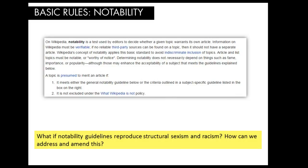First, does this topic have significant coverage? Significant coverage addresses the topic directly and in detail so that no original research is needed. Second, are the sources used to identify the topic reliable? Reliable means sources need editorial integrity to allow verifiable evaluation of notability, as determined by the reliable source guideline. Sources can include published works in all forms and media, and in any language. The availability of secondary sources covering the subject is often a good test for notability. There is no fixed number of sources required, but multiple sources are generally expected. Sources do not have to be available online or in English, but multiple publications from the same author or organization are usually regarded as a single source for purposes of establishing notability.